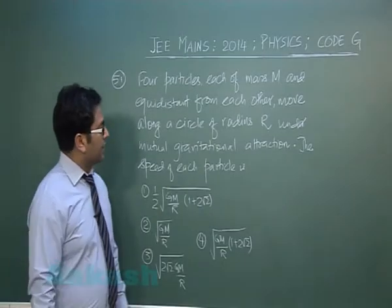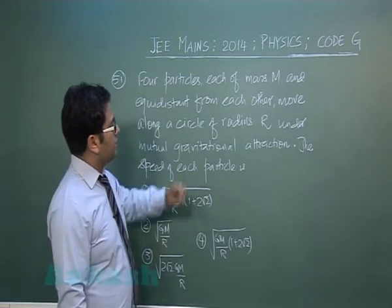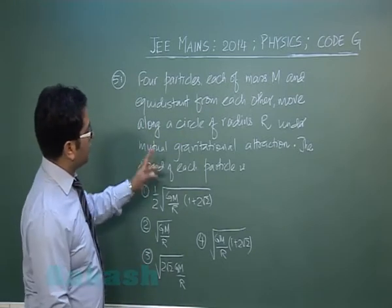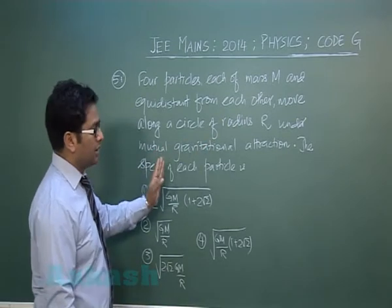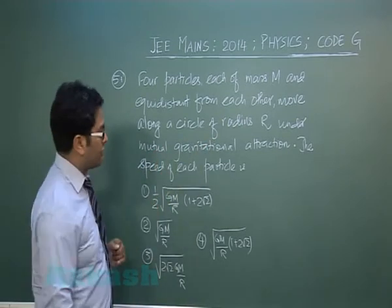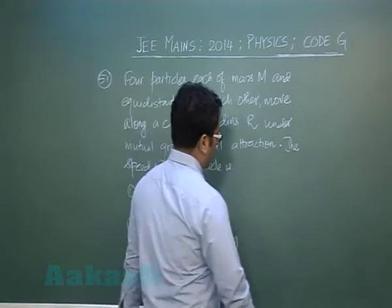Question number 51 is from gravitation. Four particles, each of mass M and equidistant from each other, move along a circle of radius R under mutual gravitational attraction. We need to find the speed of each particle.